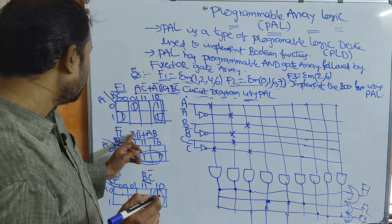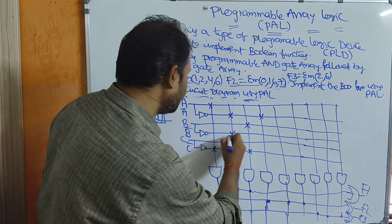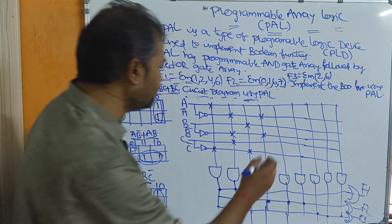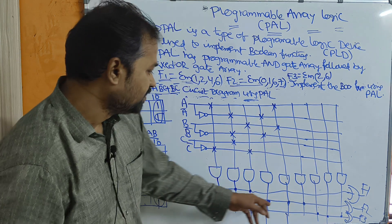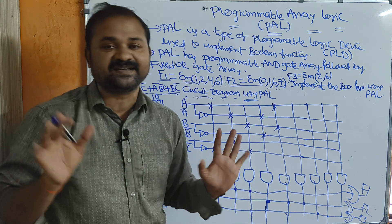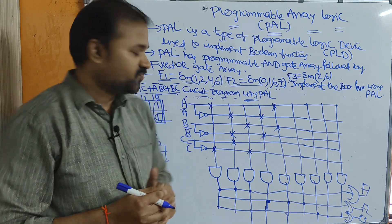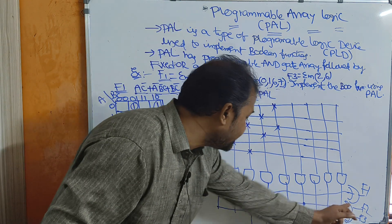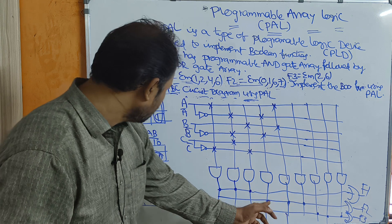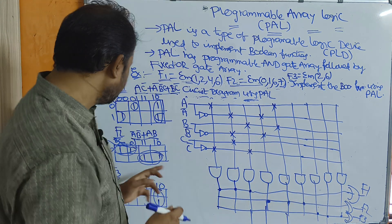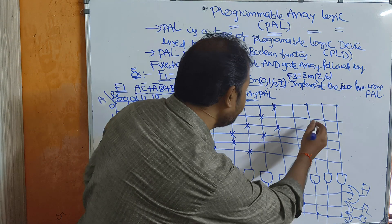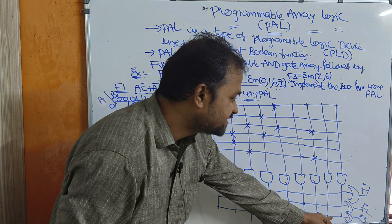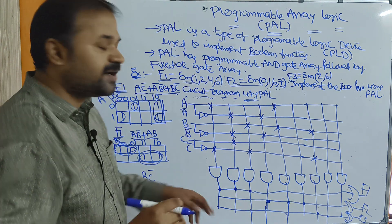For the second expression F2, the fourth AND gate represents Ā·B̄ — mark the intersections for A bar and B bar. The fifth AND gate represents A·B — mark intersections for A and B. The sixth AND gate has no connections because the second boolean expression contains only two product terms. So the second OR gate is Ā·B̄ + A·B + 0. For F3, the seventh AND gate represents B·C̄ — mark those intersections. The eighth and ninth AND gates are zero, giving B·C̄ + 0 + 0, which is just B·C̄.